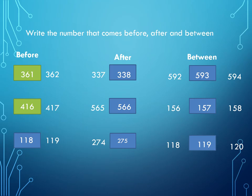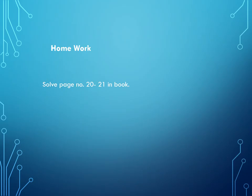Now come to between numbers. Now you have two numbers and you have to write the middle number. First we have 592 and 594, so count what is missing between 592 and 594. Yes, 593 is missing. Next are 156 and 158, and what comes next to 156? Yes, 157. Last is 118 and 120, so what comes after 118? Yes, 119.